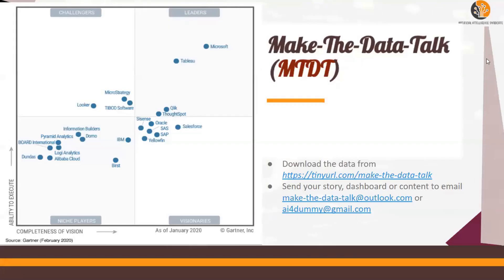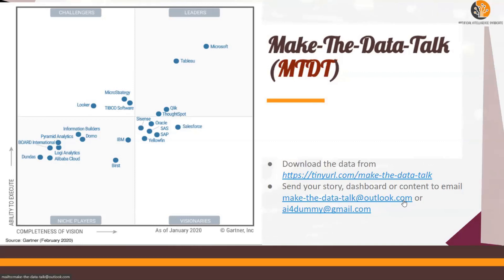You can use any of the tools available in the market — there is no limitation. You can use Python, R, or any other open source tool. Based on Gartner as of 2020, the listed tools include Tableau, Looker, Qlik, and more. You can submit your entries to tinyurl.com/make-the-datatalk, download the data, and send your visuals, your story, or your content to make-the-datatalk@outlook.com or ai4dummy@gmail.com.